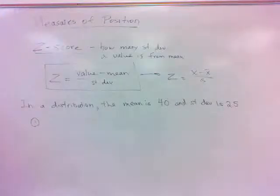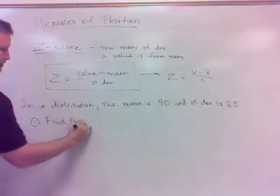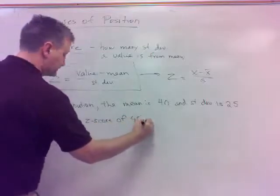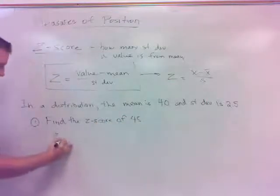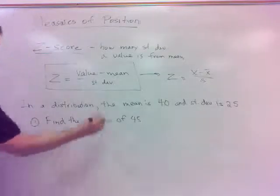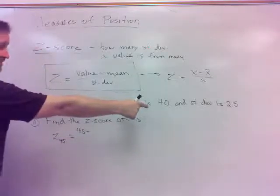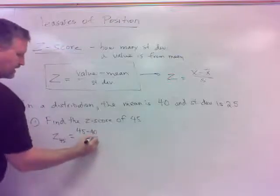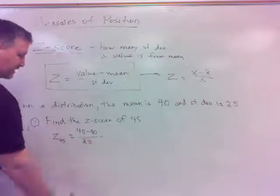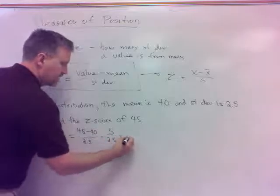Number one, find the z-score of 45. z₄₅ equals 45 minus 40 divided by 2.5. That's 5 divided by 2.5, which is 2.